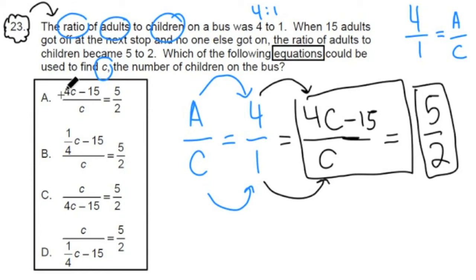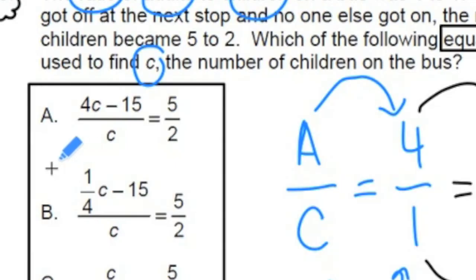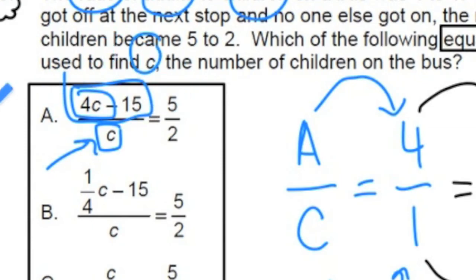If you look closely at A, you'll see that A matches up with what we have here. Let's analyze A, analyze the parts. The bottom here is the number of children, so C represents the number of children. 4C represents the number of adults at the first stop. 4C minus 15 represents the adults after the second stop because 15 got off. And this whole thing right here, this whole part represents the ratio of adults to children after the second stop.